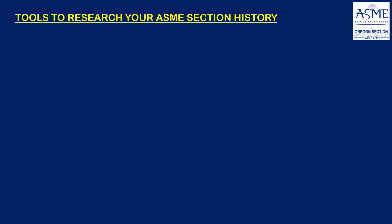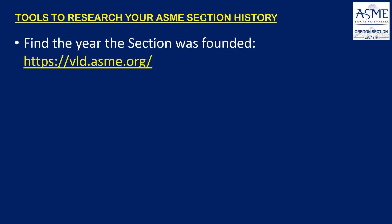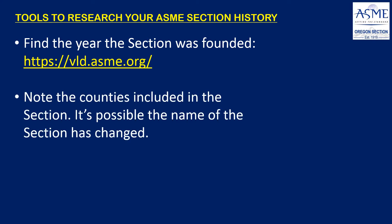We'll begin with the founding of your section. You can use the website vld.asme.org and search for the section to see its founding year. Also, you should keep track of the counties included in the creation of that section, because it's possible the name of the professional section has changed. You can use the counties to always find the right one you're looking for.